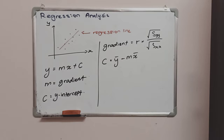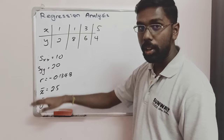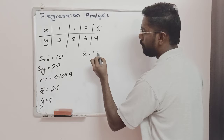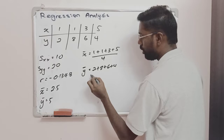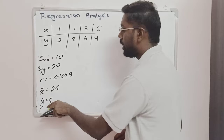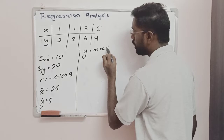Let's look at an example. This is a previous example where to find SXX, SXY, SYY and the R value we look into the previous class. To find the mean of X and mean of Y: mean of X is 1 plus 1 plus 3 plus 5 divided by 4, giving 2.5, and mean of Y is 2 plus 8 plus 6 plus 4 divided by 4, giving 5. We represent the linear regression equation as y equal to mx plus c.